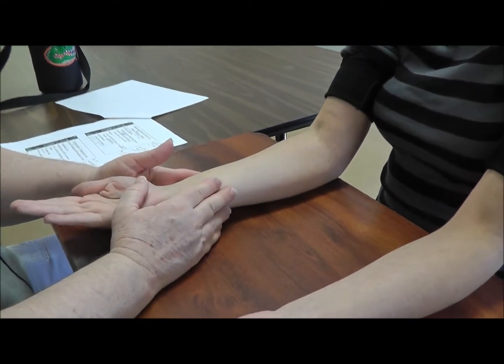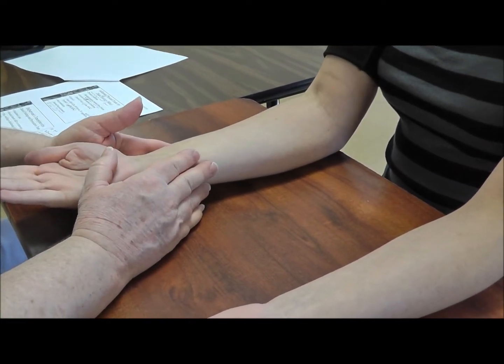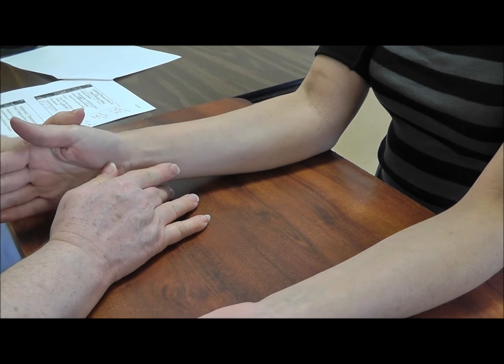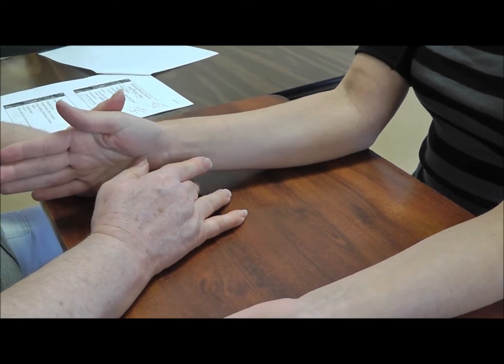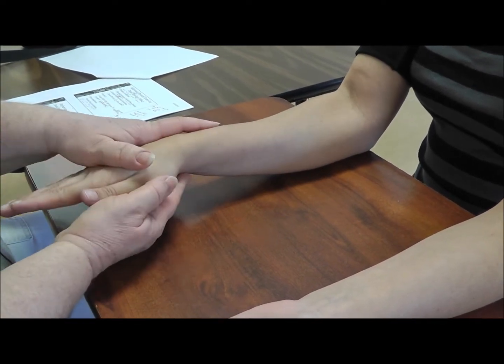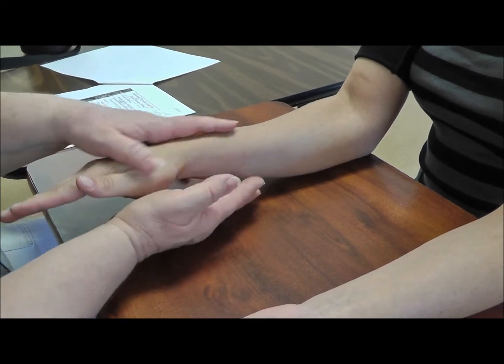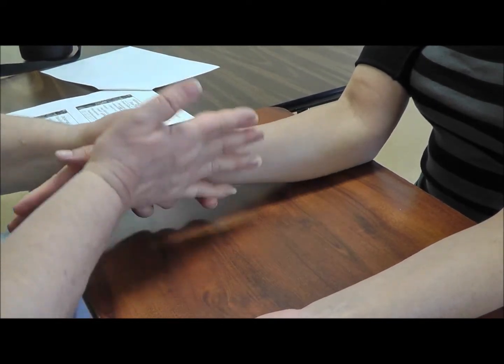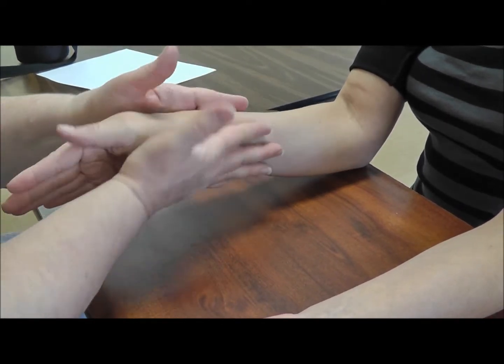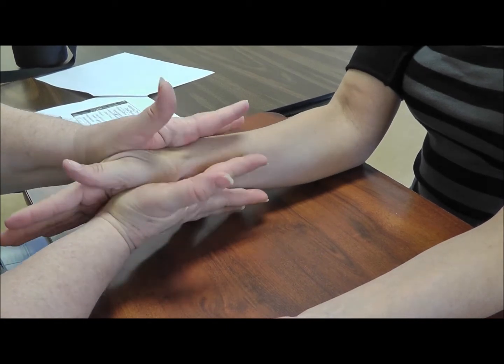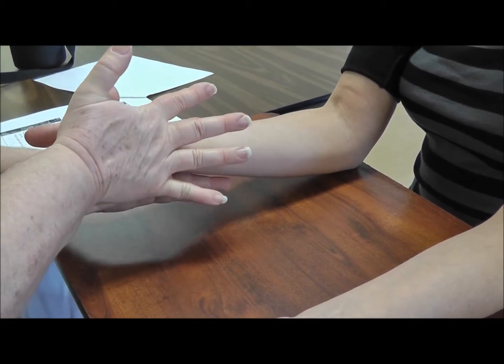Okay, so that would be for more proximal median nerve. Then we can do proximal for radial nerve. So this one's going to be resisted supination. So I'm going to tell the client that I'm going to give them resistance and they're going to turn their hand this way. Okay.